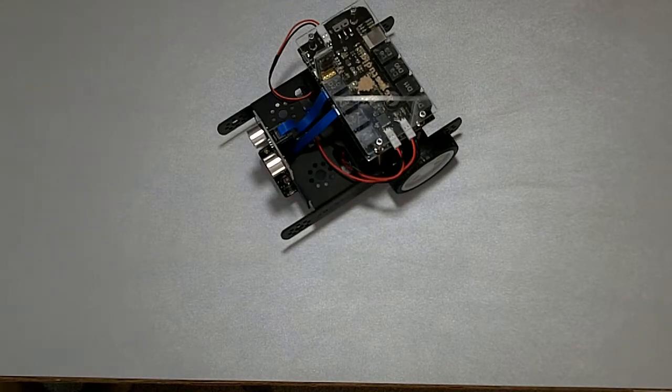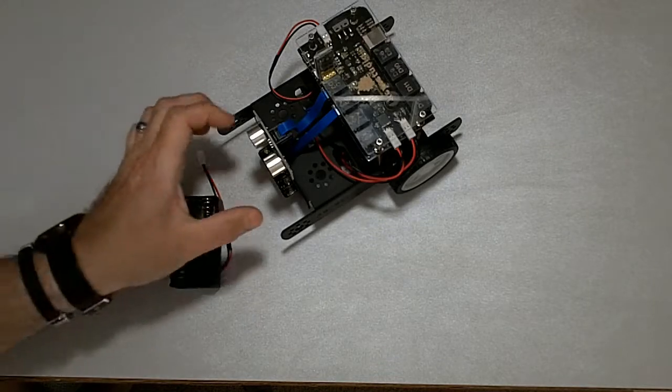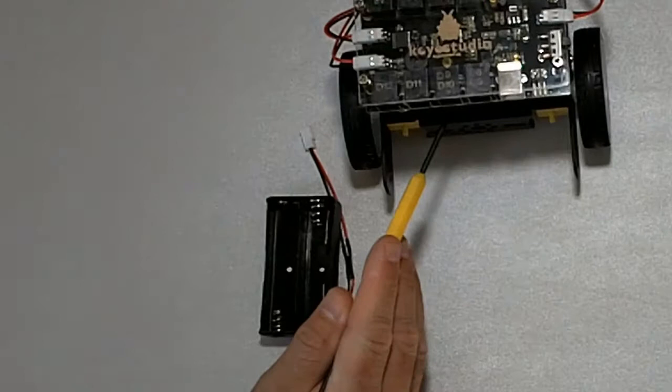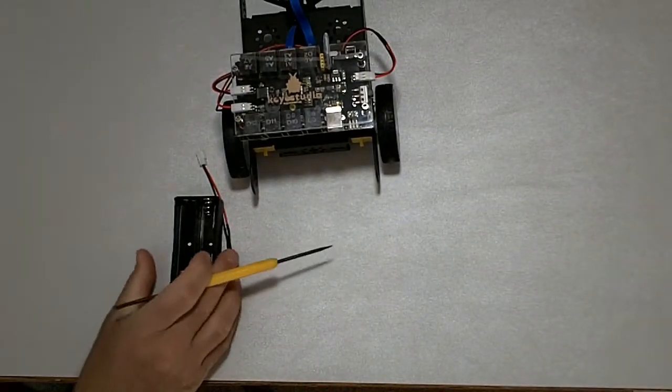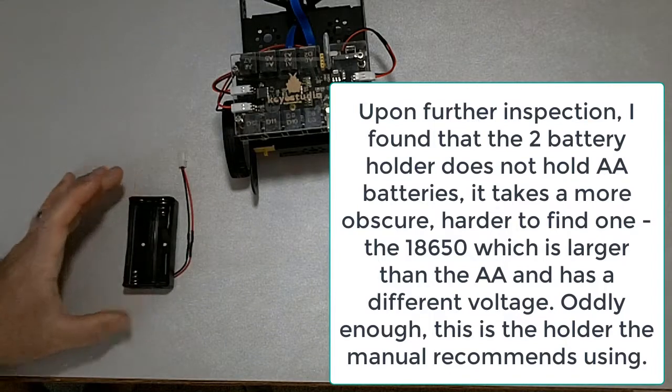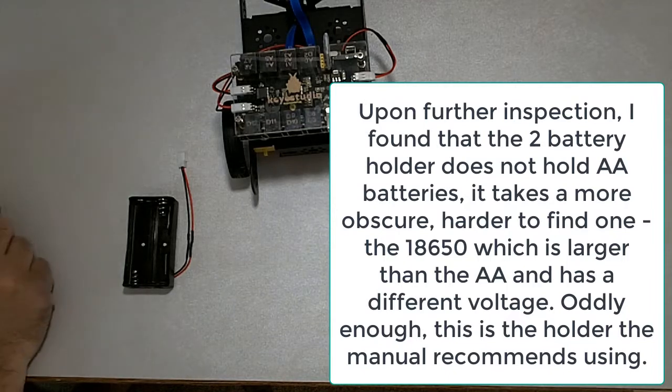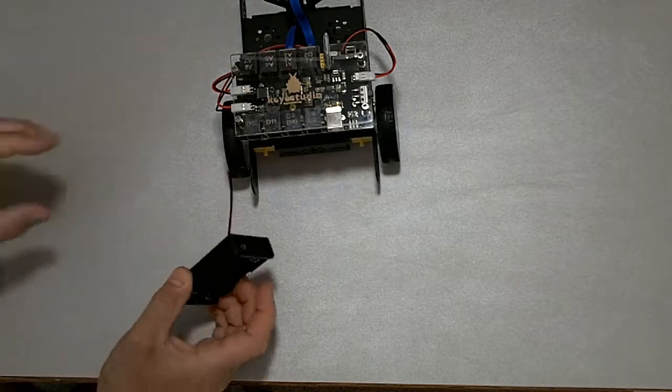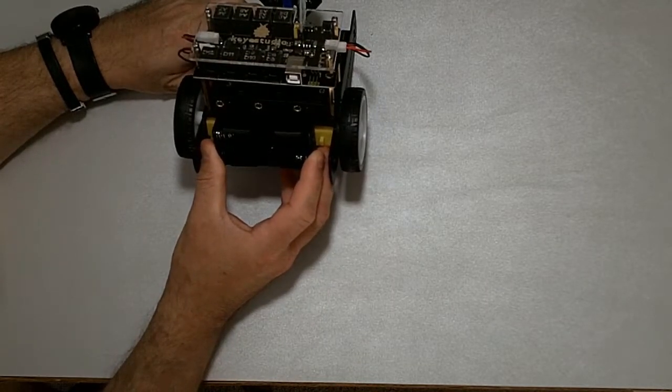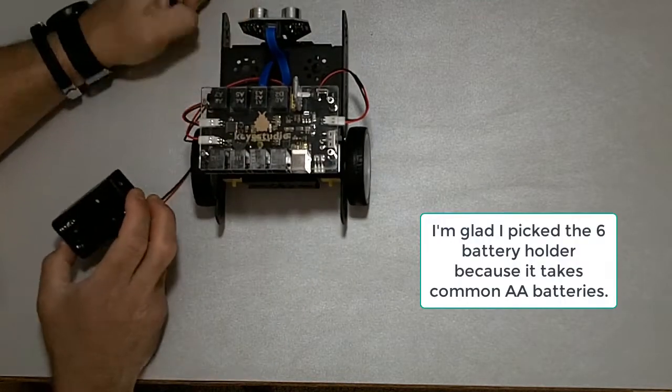You might remember during the unboxing that there were two battery holders. Here's one, and then there was one that held six batteries which we can see is mounted here. The instructions give you the option to use one or the other, which is kind of weird because more batteries means more power—it's gonna last longer and not die as quick. So if you opt for the two battery holder, it attaches to the back like that. However, I wanted the six battery holder.